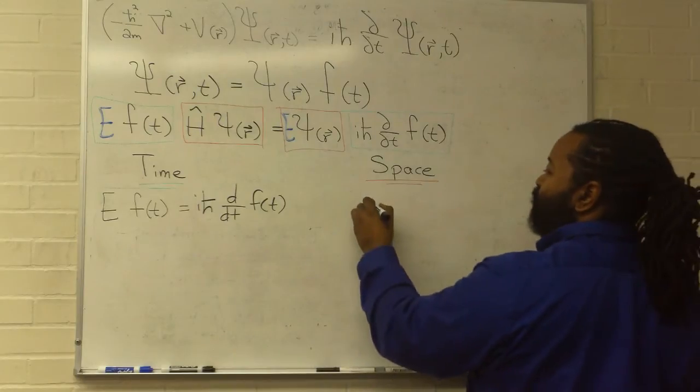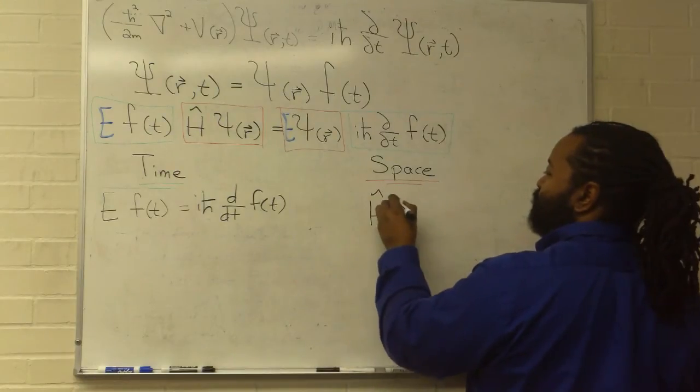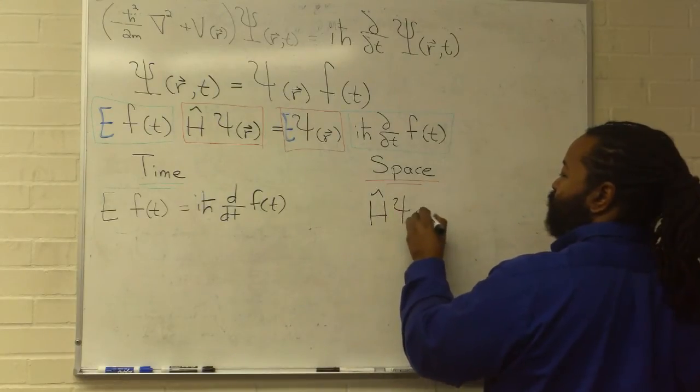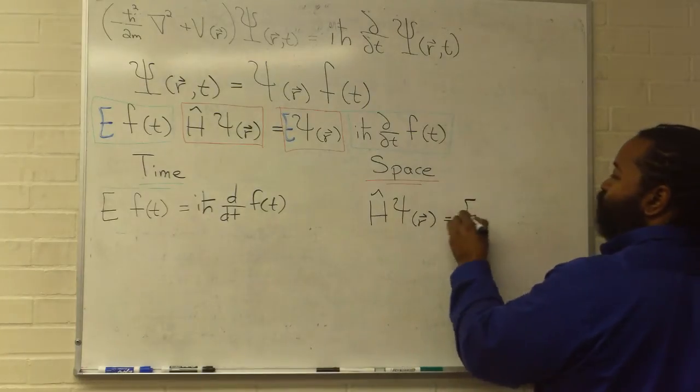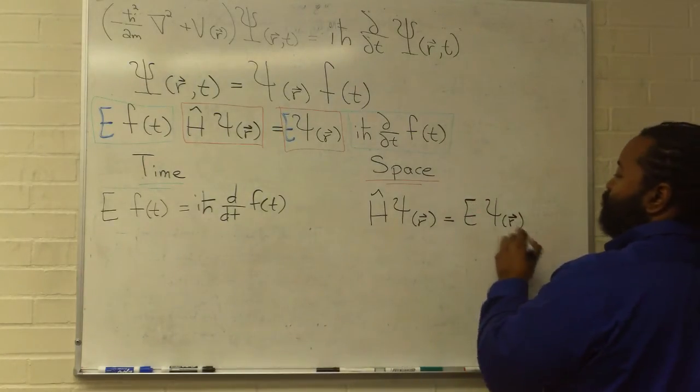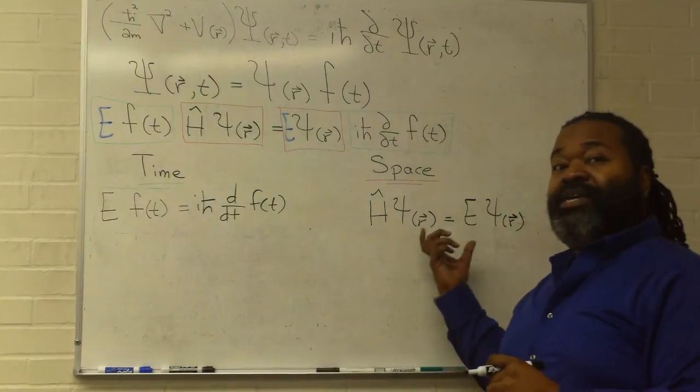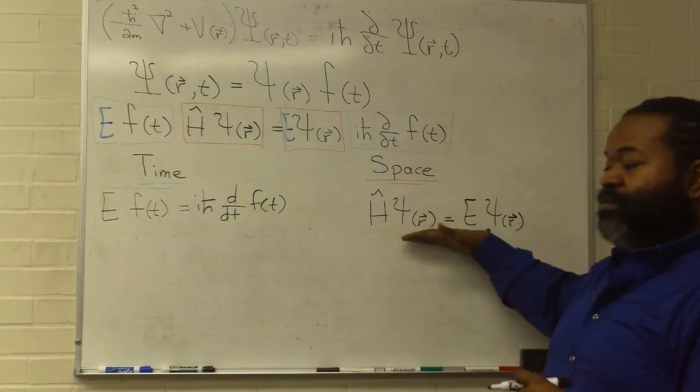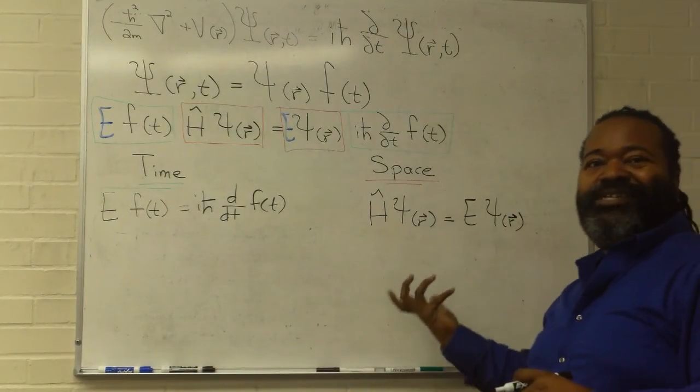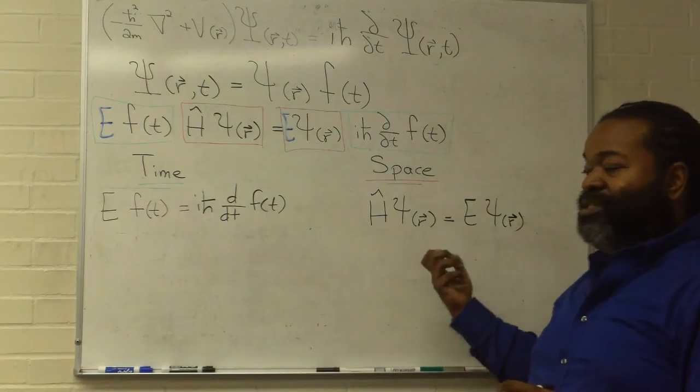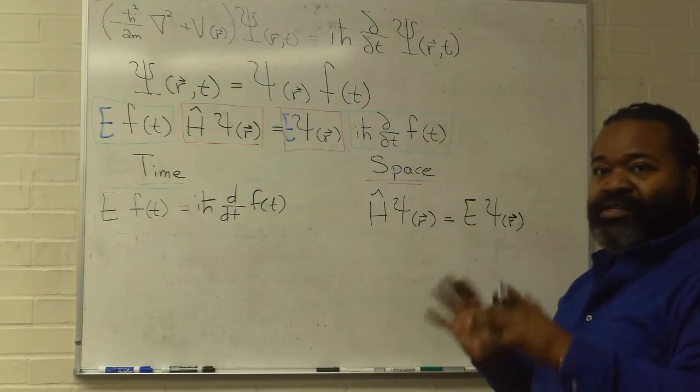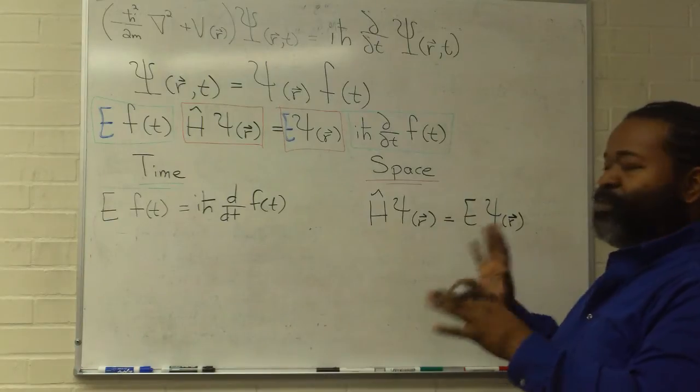For the space part, we'll see that this is how we can recover the familiar form of the Schrödinger equation. This is the time-independent version. This space solution is going to take on different forms based on the specifics of the spatial content and aspects of the problem.